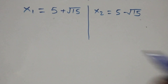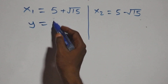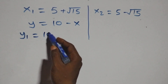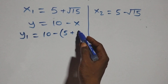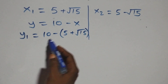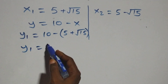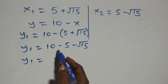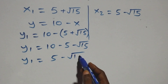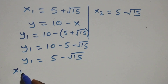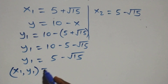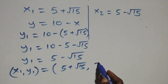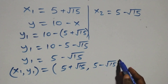To solve for the corresponding values of y, we use the relation y equals to ten minus x. So y₁ equals to ten minus x₁, which is ten minus (five plus root fifteen). Opening the bracket, y₁ equals to ten minus five minus root fifteen, which gives y₁ equals to five minus root fifteen. Therefore, the first solution pair (x₁, y₁) equals to (five plus root fifteen, five minus root fifteen).